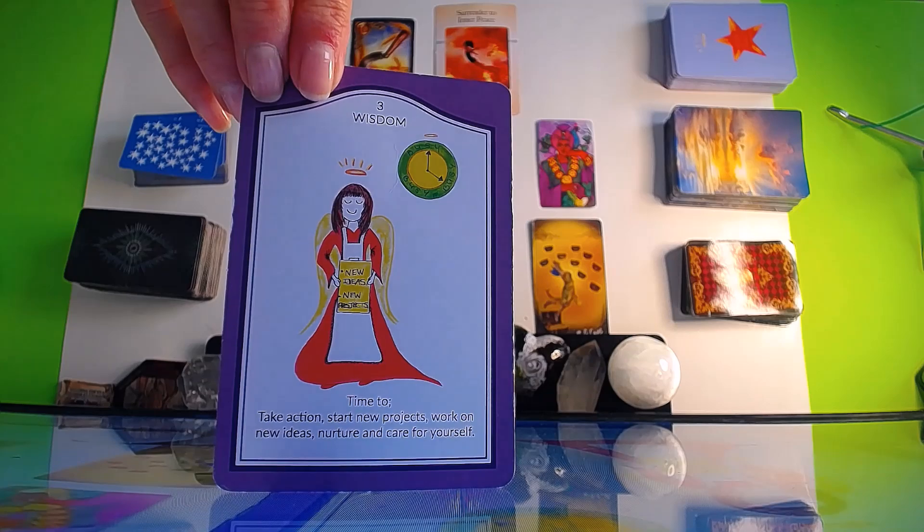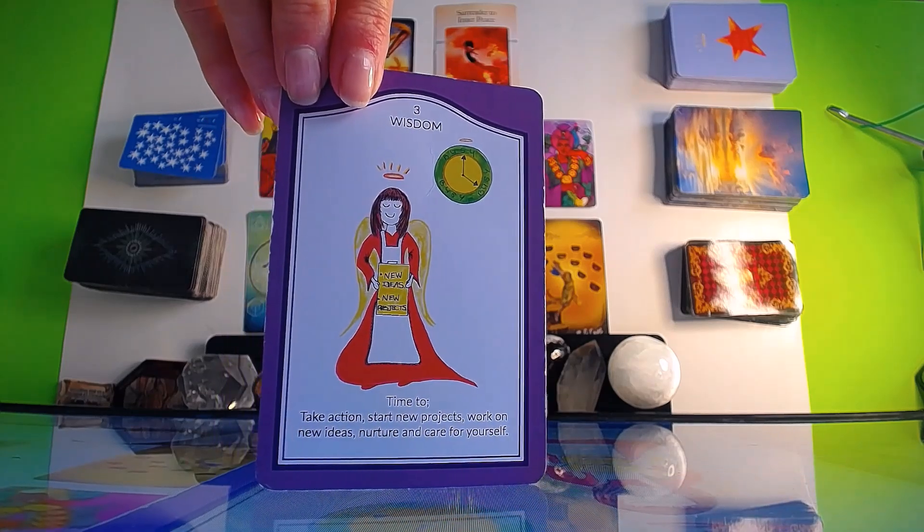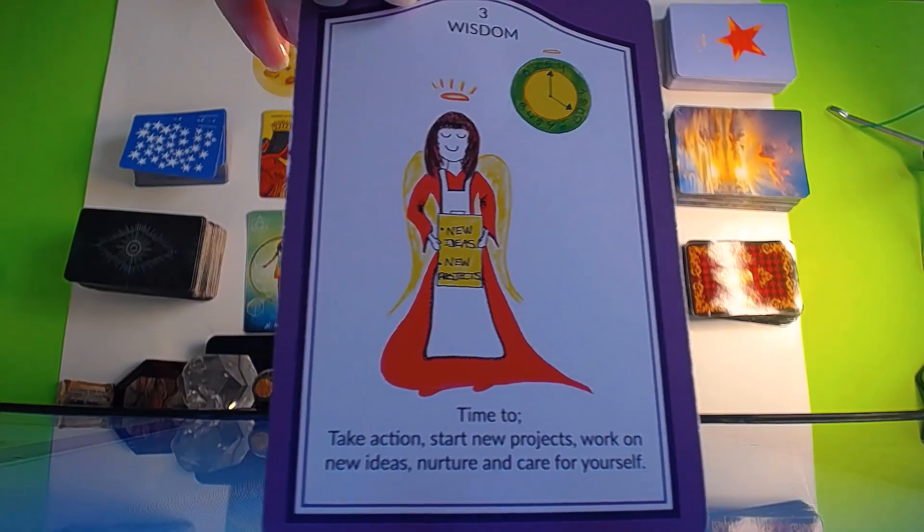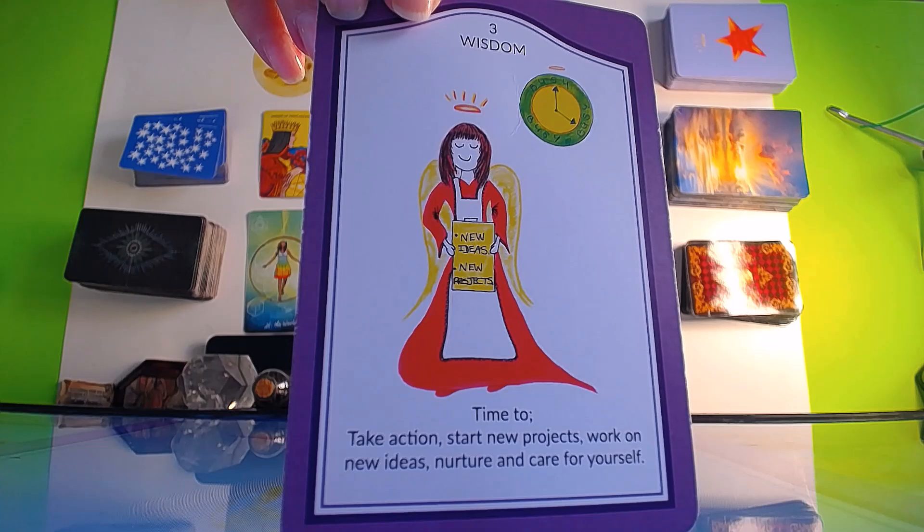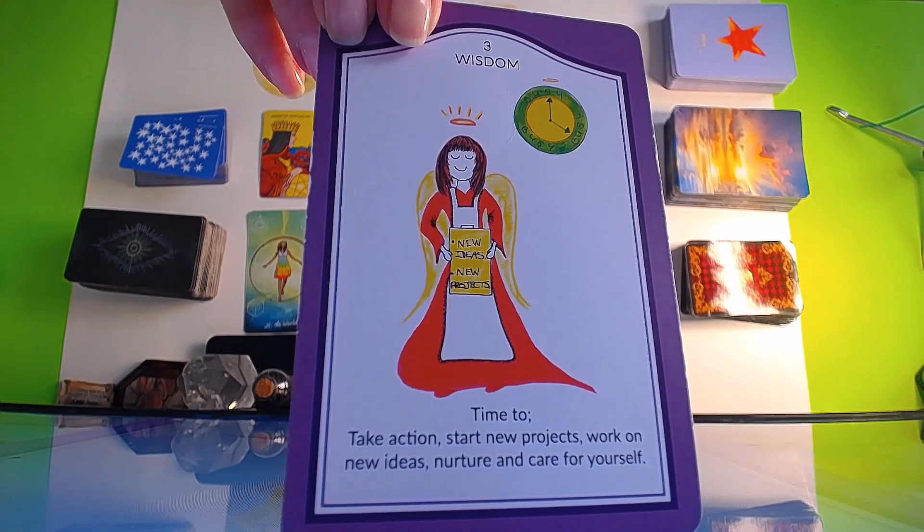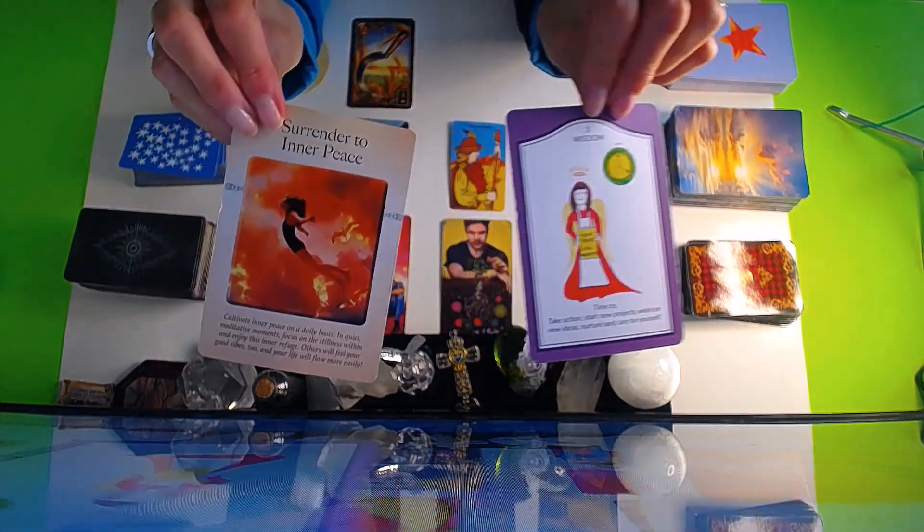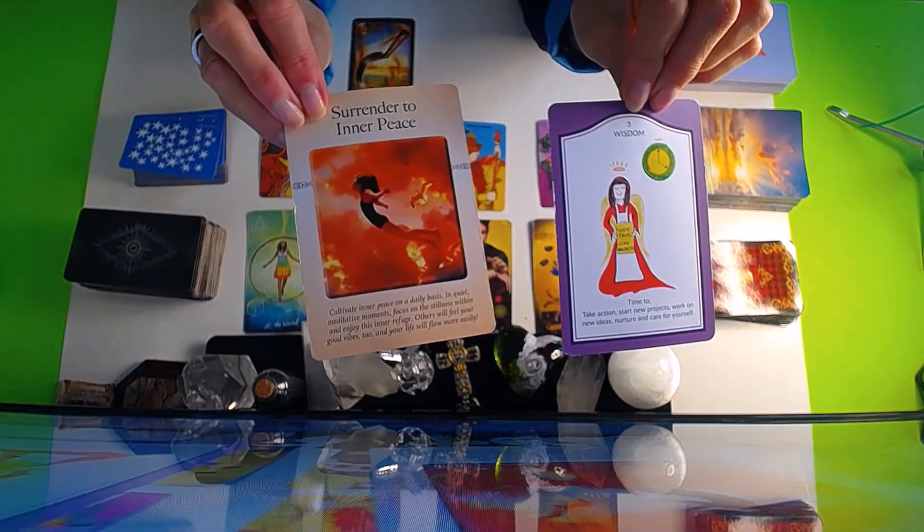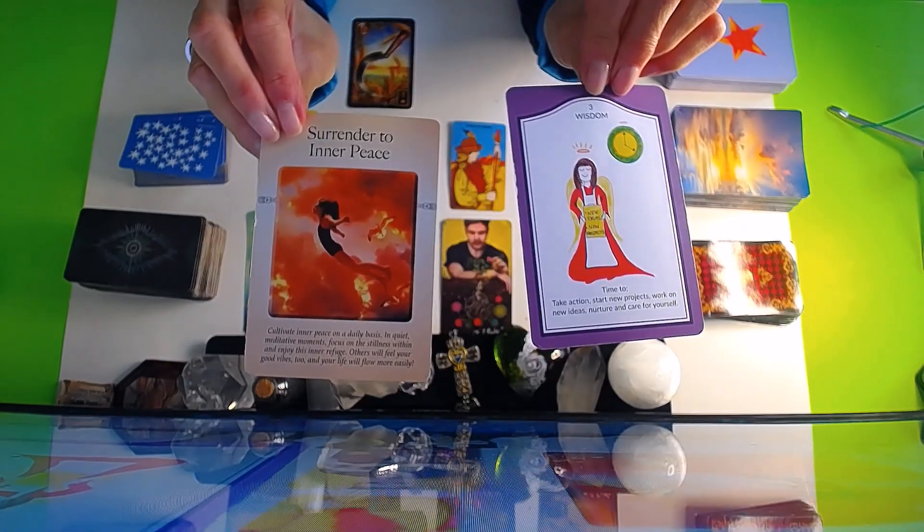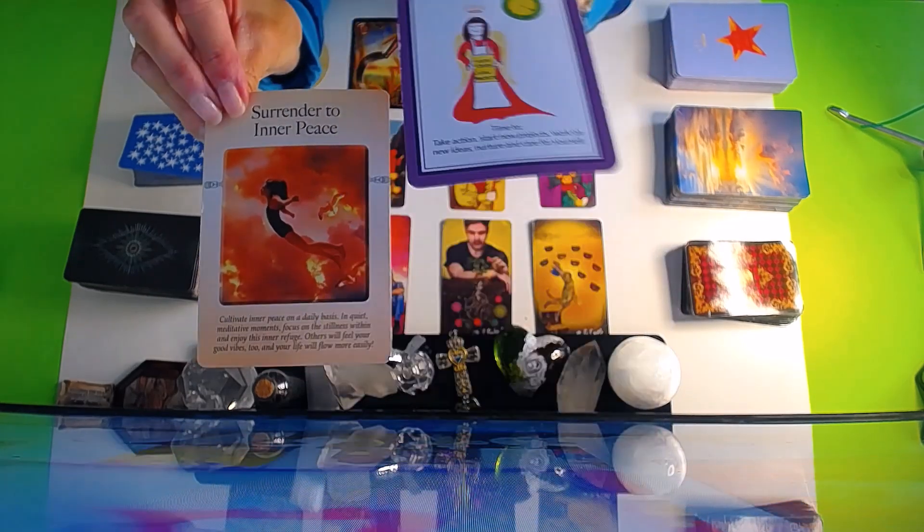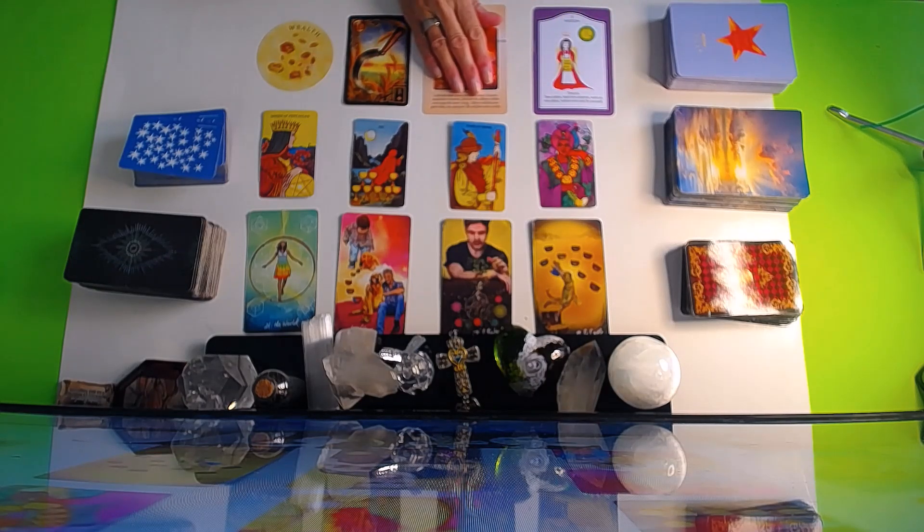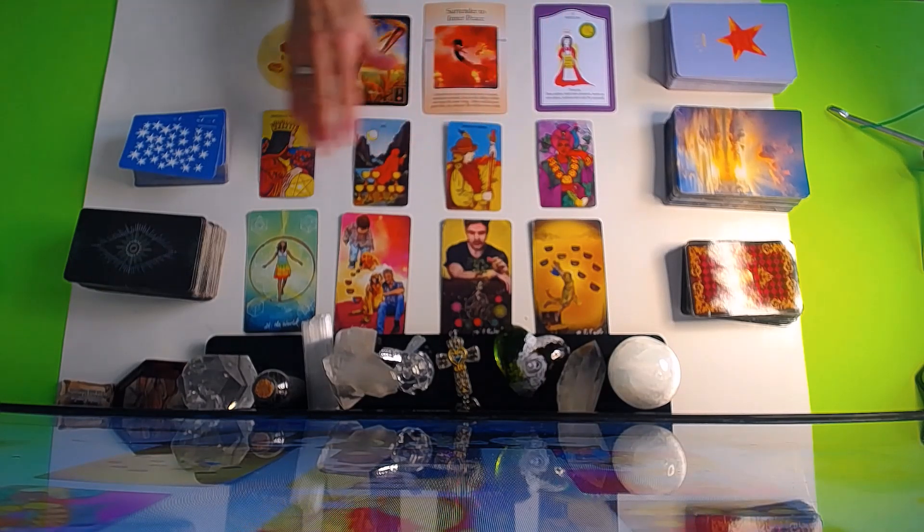We talked about the wealth card, the harvest card, the Queen of Pentacles, the Wheel of Fortune. It doesn't get much better than this when it comes to wishes being fulfilled. You've got the Wisdom card: pay attention to new ideas and projects. This is time to take action, start new projects, work on new ideas, nurture and care for yourself.